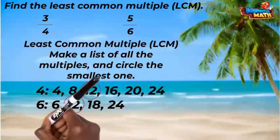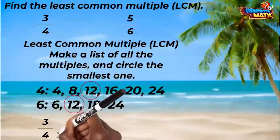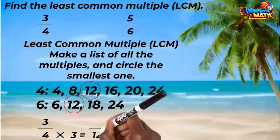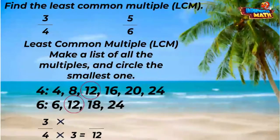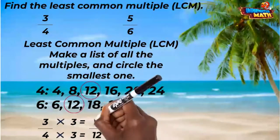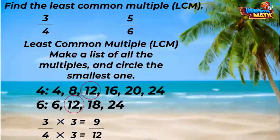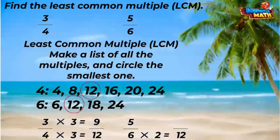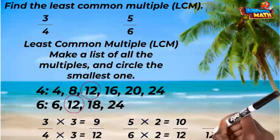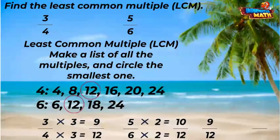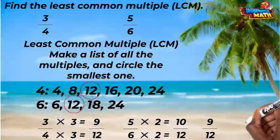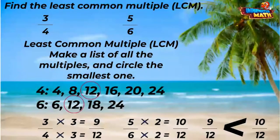Since twelve is the smallest number in common between both lists, it is the least common multiple, and we will use that as our denominator. Now let's get our equivalent fractions with the denominator of twelve. Four times three equals twelve, so multiply the numerator by three also — three times three equals nine. Six times two equals twelve, so multiply the numerator by two also — five times two equals ten. Now we can compare nine-twelfths to ten-twelfths. Ten-twelfths — so five-sixths — is greater. Great work today; I think you've earned a beach day!